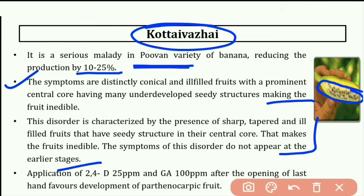Management for Kotai Vajay: We can spray 2,4-D at 25 ppm and GA (gibberellic acid) at 100 ppm. This should be applied after the opening of the last hand to favor development of parthenocarpic fruit.